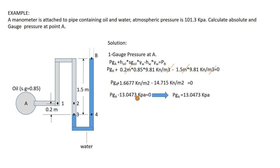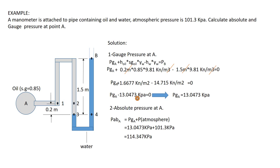Regarding absolute pressure: absolute pressure equals gauge pressure plus atmospheric pressure. We already found gauge pressure = 13.0473 kPa, and atmospheric pressure = 101.3 kPa. Adding these together, absolute pressure at point A equals 114.047 kilopascal. I hope it's helpful!